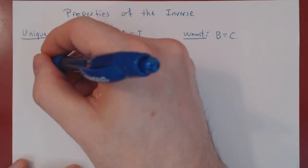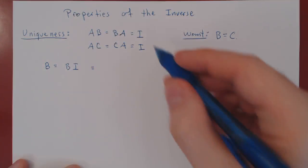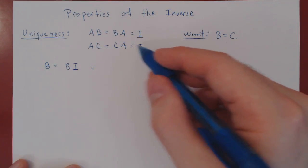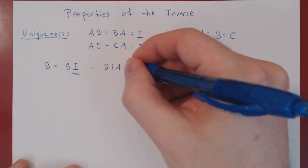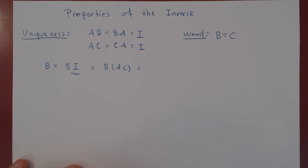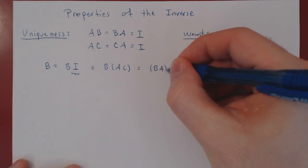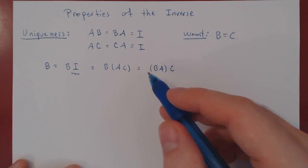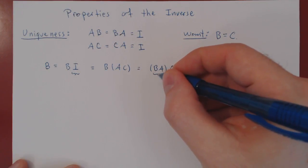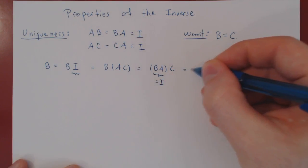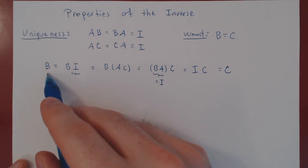Let's prove it. Start with B. We have B equals B times I. We can make a substitution: I equals AC, so replace I by AC, giving B times AC. Multiplication is associative, so this is BA times C. But B is the inverse of A, so B times A equals I. We get I times C, and I times C is simply C. This proves that B must equal C.